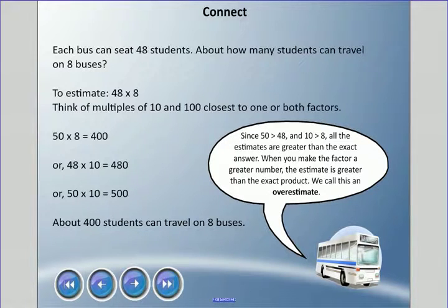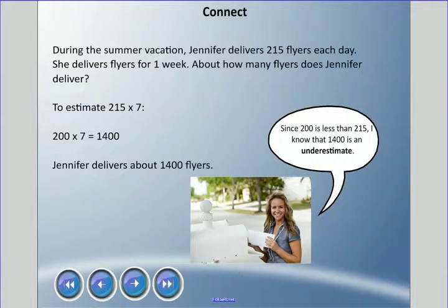During the summer vacation, Jennifer delivers 215 flyers each day. She delivers flyers for one week. About how many flyers does Jennifer deliver? We can estimate 215 times 7. I hope you know that one week is seven days. Let's change 215 into 200, we're going down to the nearest hundred. 200 times 7 is 1400, which we learned yesterday. So Jennifer delivers about 1400. Since 200 is less than 215, I know that 1400 is an underestimate.